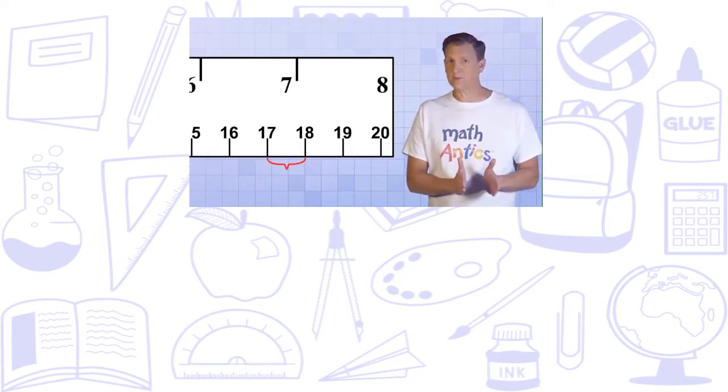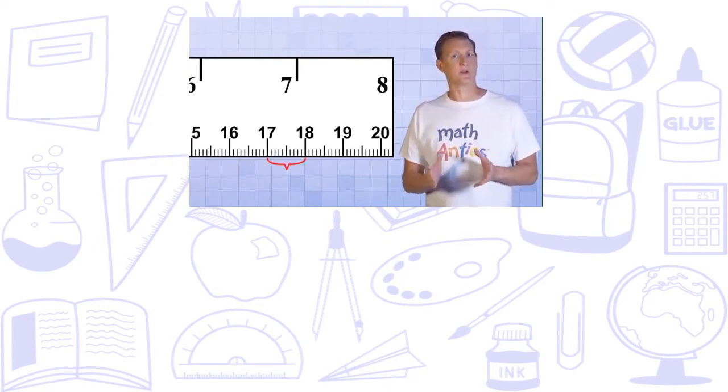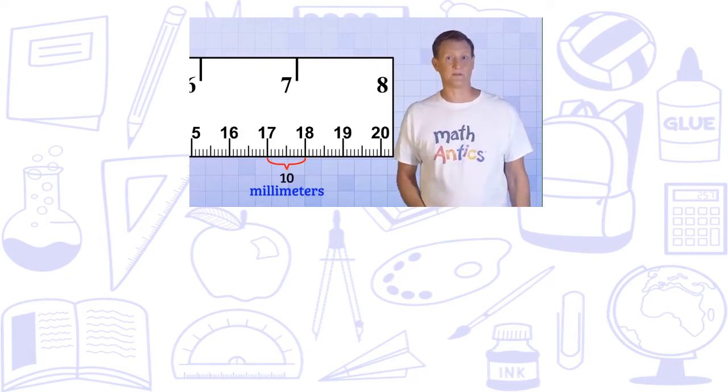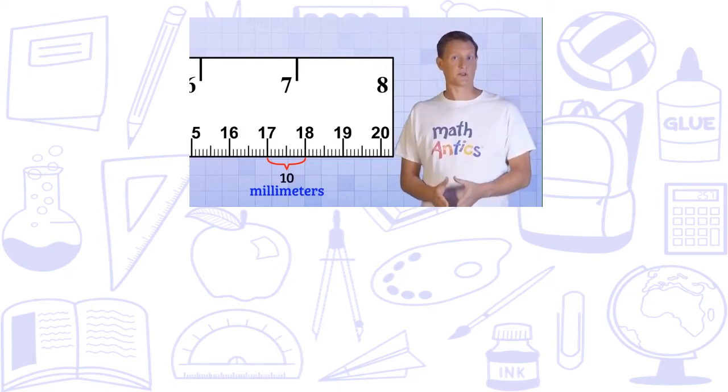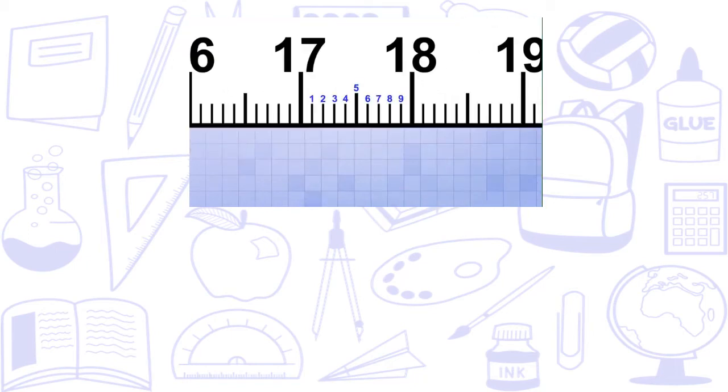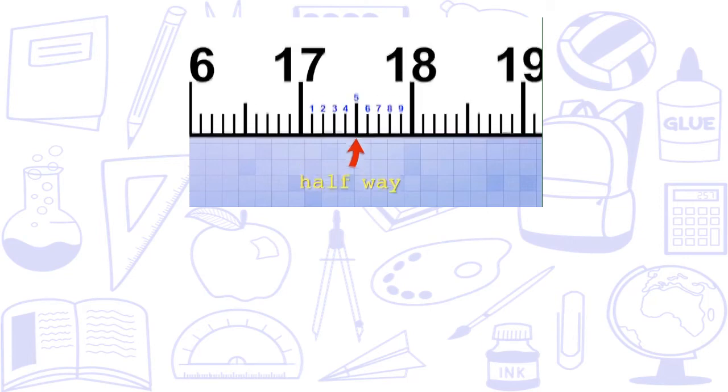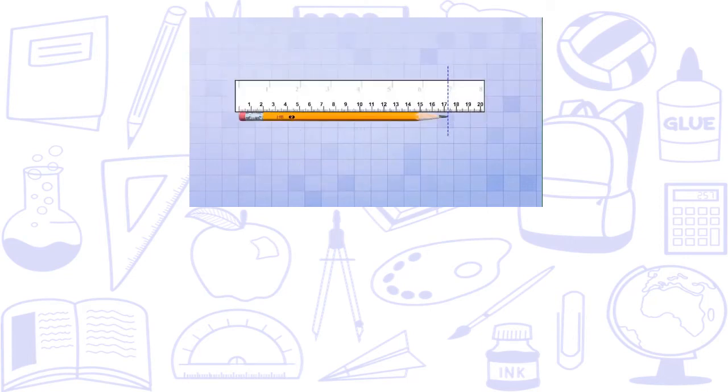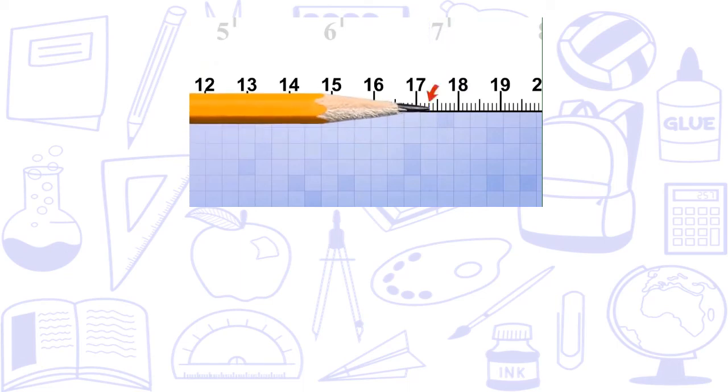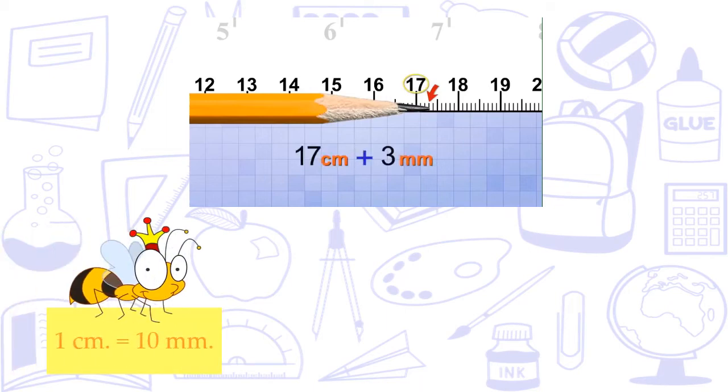Fortunately, most rulers divide the space between each centimeter mark into 10 equal parts that represent millimeters, which are exactly 1 tenth of a centimeter. Because the millimeter marks are so much smaller, they don't have numbers on them. But if you look closely, you'll be able to count that there are 9 smaller lines that divide the centimeter into 10 equal parts. The middle of these 9 lines is usually a little longer than the rest so that it's easier to tell where the halfway point is. Using these subdivision marks, we can get a more accurate measurement of the length of our sharpened pencil. Do you see how the pencil's tip almost lines up with the third subdivision line that comes right after the 17 centimeter mark? That means that the length of the pencil is 17 centimeters plus 3 millimeters.